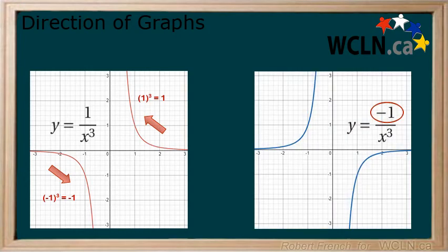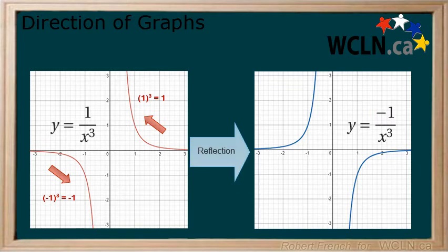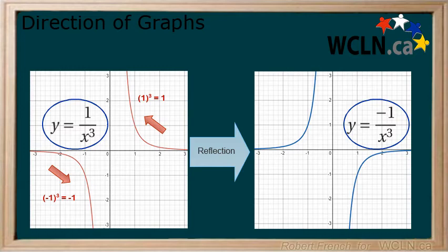If the largest power in the numerator is negative, or the only value if there is no power, then this is a reflection and the graph is reflected in the x-axis. Here we have two rational functions where the only difference is the negative, with the second function being a reflection of the first.